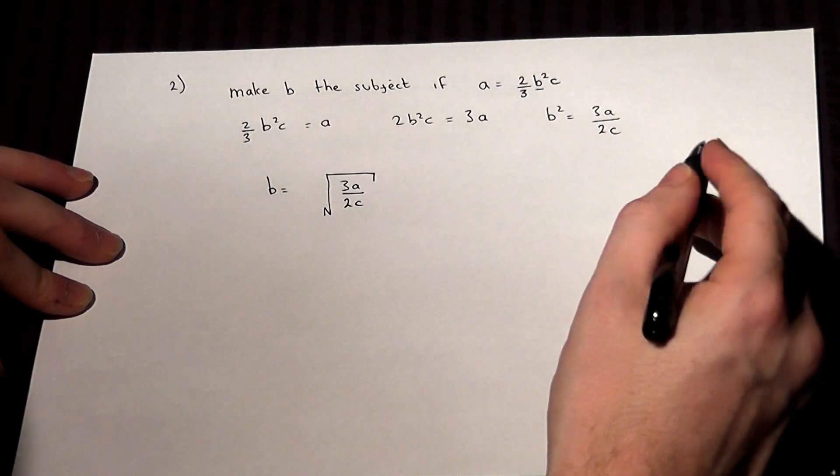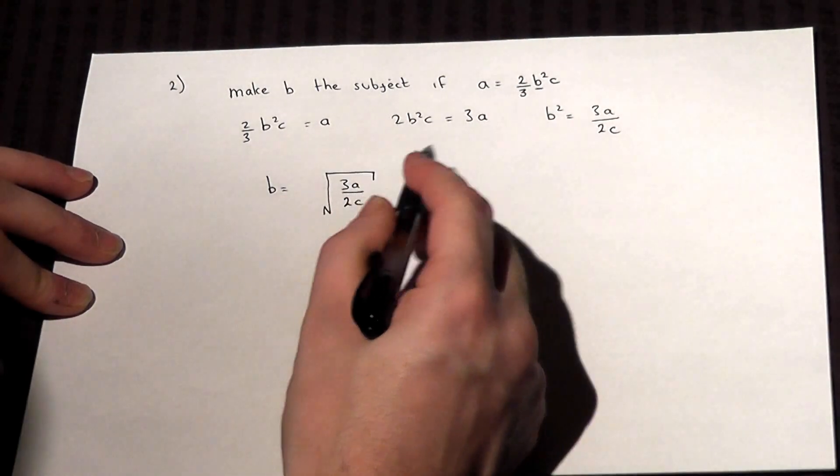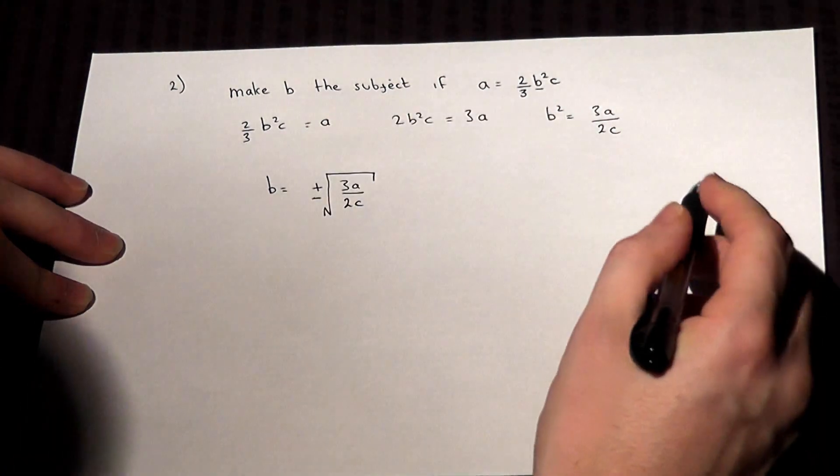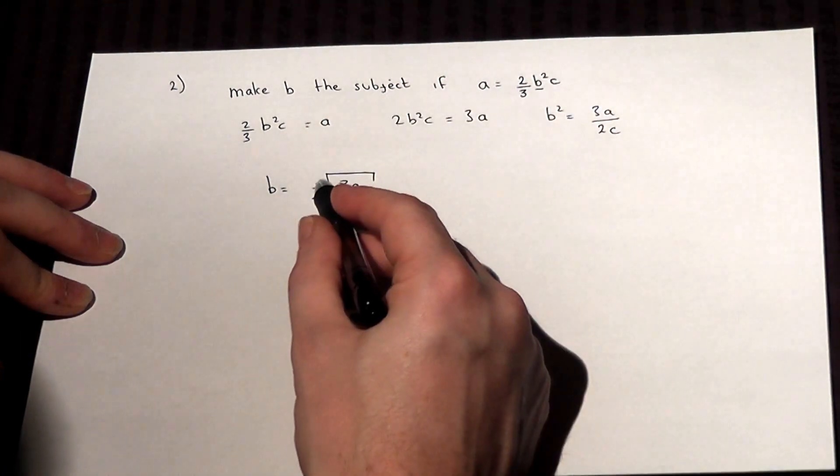But don't forget, when we work out the square root, we must include the plus or minus. B could have been either positive or negative. Thank you.